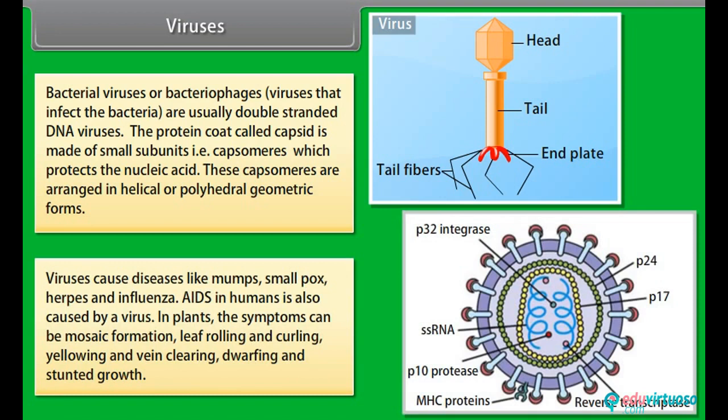Viruses cause diseases like mumps, smallpox, herpes and influenza. AIDS in humans is also caused by a virus. In plants, the symptoms can be mosaic formation, leaf rolling and curling, yellowing and vein clearing, dwarfing and stunted growth.